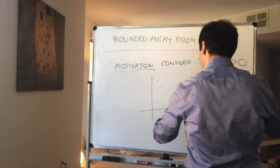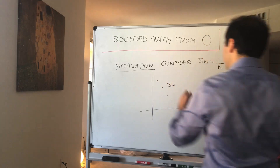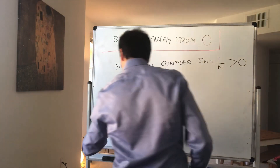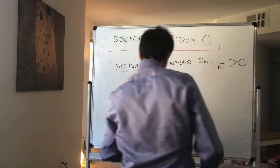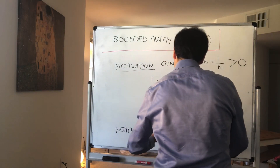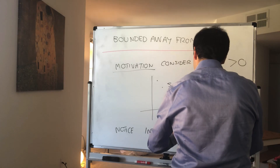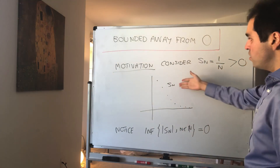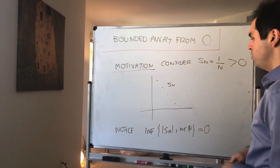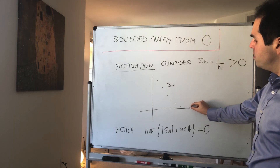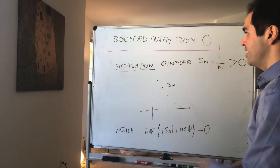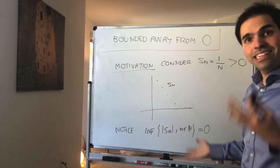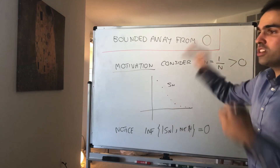Even though each of the terms is positive, the infimum of the sequence S_n is 0. So the infimum of the absolute values of S_n, where n is in the naturals, is actually 0. Even though the sequence can be positive, the minimum value could still be 0. In particular, the distance between the x-axis and your sequence slowly becomes 0.